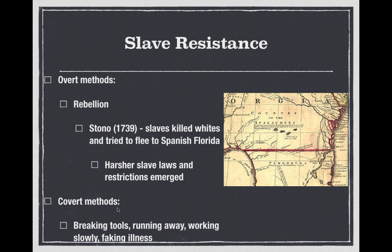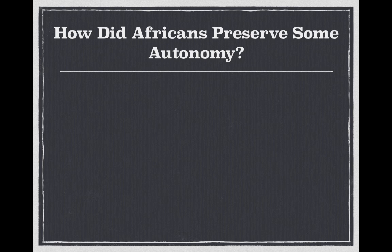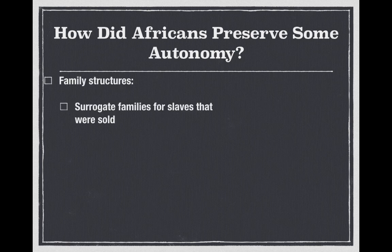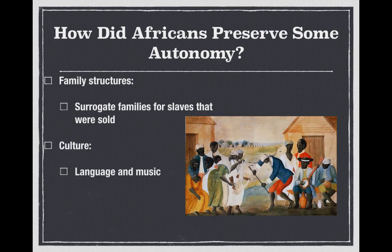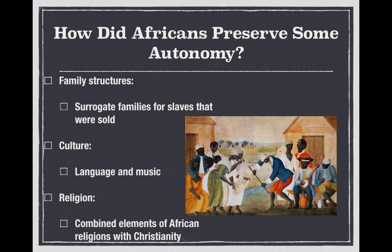How did Africans preserve some autonomy? They did so through family structures — surrogate families formed for slaves who were sold, where that slave would be taken care of by others on the new plantation. Through culture, we see the emergence of language and music, which played a huge role in slave life. And through religion, we see a combining of elements of African religions with Christianity.